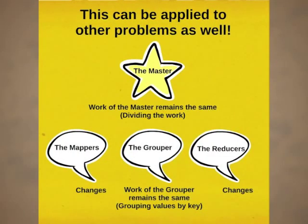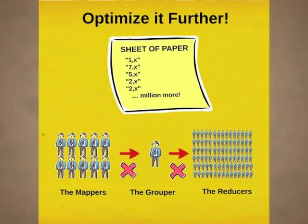This process can be easily applied to other kinds of problems as well. In such cases, the work of the master — dividing the work — and the grouper — grouping the values by key, where the value before the comma remains the same — stays the same. This is what any MapReduce library provides. The work of the mappers and reducers differs according to the problem. You can even optimize further: for example, you could write 'X' instead of the actual word since in the end we are just counting. Also, everything need not happen in strict sequence — first mapper, then grouper, then reducer.